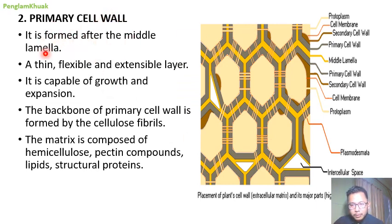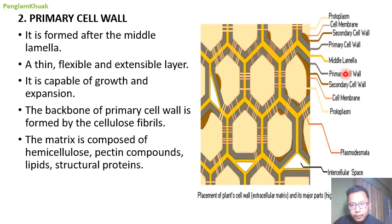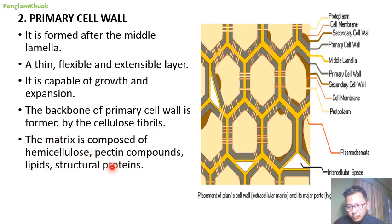The primary cell wall is formed after the middle lamella — the middle lamella forms first. This primary cell wall is thin, flexible, and extensible, meaning it can increase in surface area. It is capable of growth and expansion of the cells. The primary cell wall is mostly made up of cellulose fibers, and also hemicellulose, pectin compounds, lipids, and structural proteins. The maximum substance present is cellulose fibril.